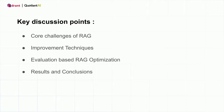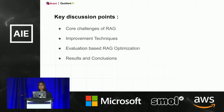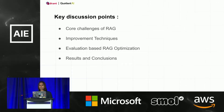In simple terms, RAG combines the capabilities of searching and retrieving through the vast amount of information stored in a knowledge source, usually a vector database. We then use this information to generate relevant and coherent responses, leveraging the capabilities of a large language model. We will be talking through the known challenges of this approach and how you can combat them by adopting evaluation-based optimization techniques to get the desired results.